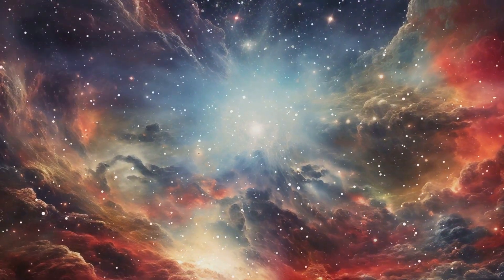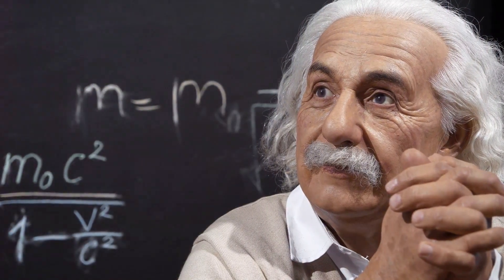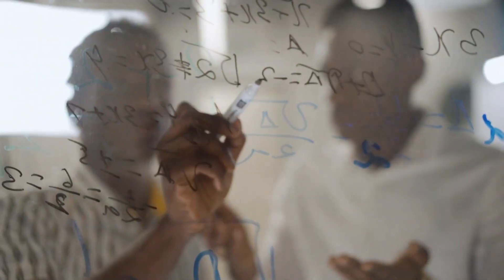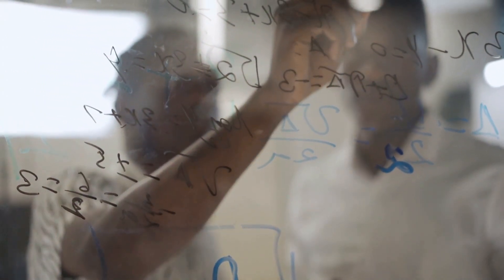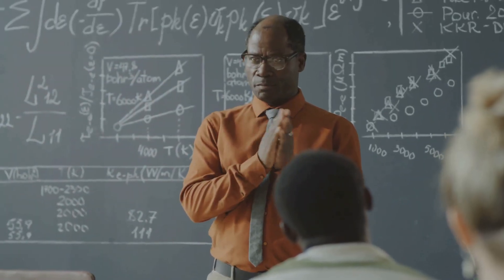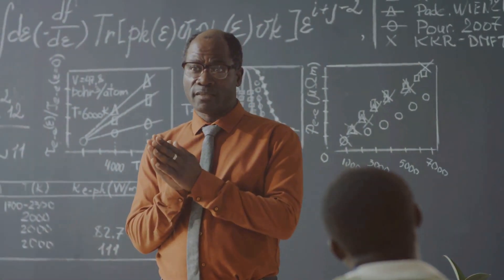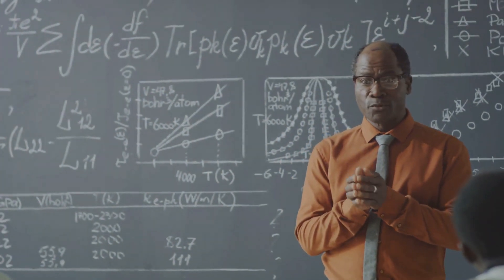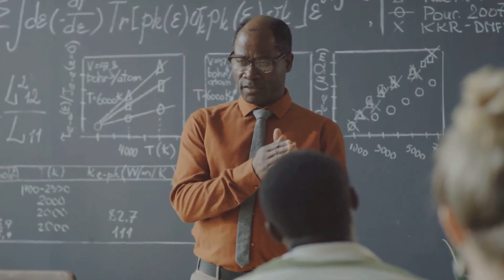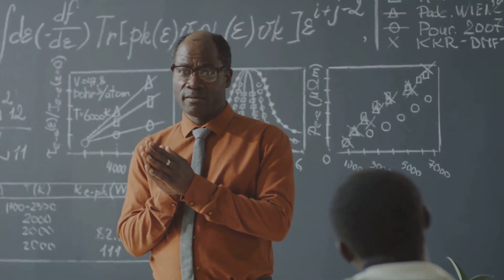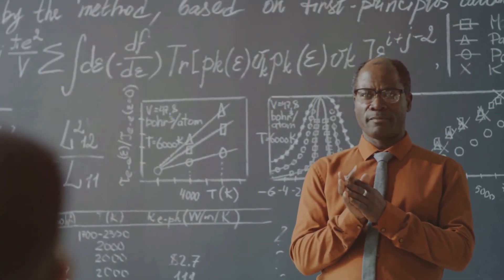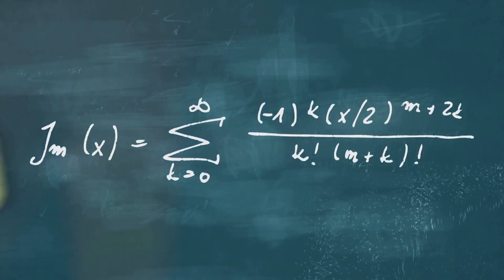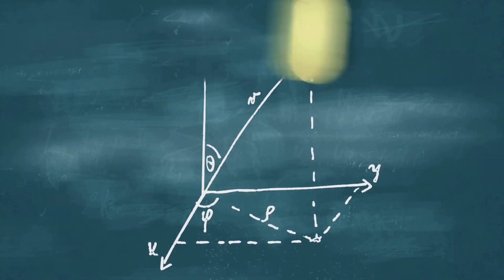These two pillars of modern physics, however, seem fundamentally incompatible. Quantum mechanics and general relativity each provide incredibly accurate descriptions of their respective domains, but when scientists try to apply both theories to phenomena like black holes or the Big Bang, the equations break down. This incompatibility has led to one of the greatest challenges in modern physics: finding a way to unify these two theories into a single, coherent framework. They're like two different languages trying to describe the same universe. Quantum mechanics speaks the language of probabilities and wave functions, while general relativity speaks the language of curved spacetime and geodesics.